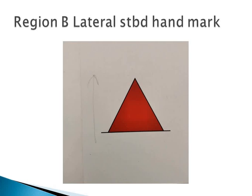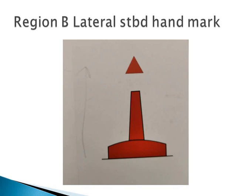Strawberry cone indicates Region B. Region B lateral port hand mark: color red, top mark nil, light red, rhythm any other than composite group flashing 2+1. Region B lateral starboard hand mark: color red, top mark single red cone, light red, rhythm any other than composite group flashing 2+1.